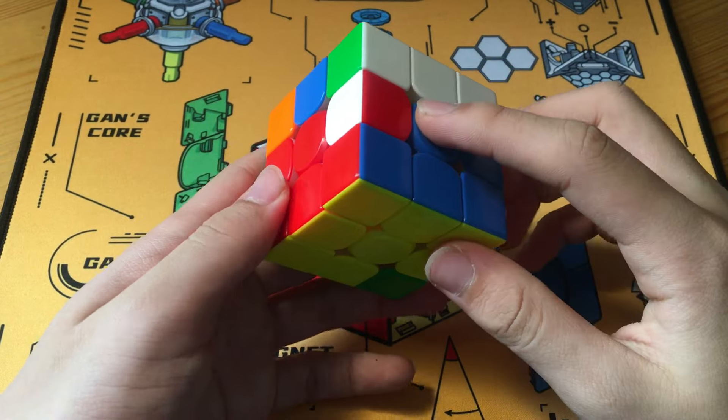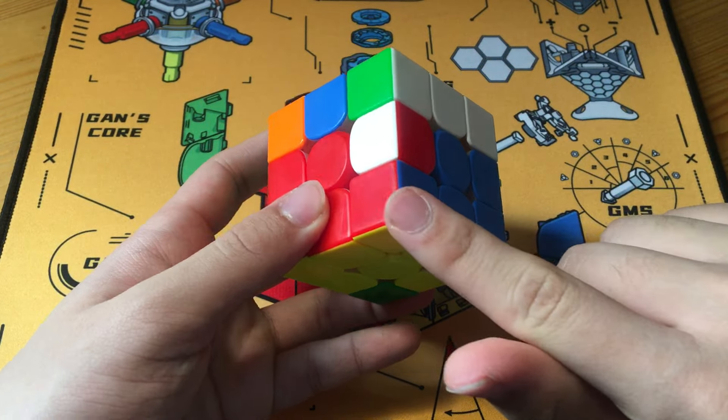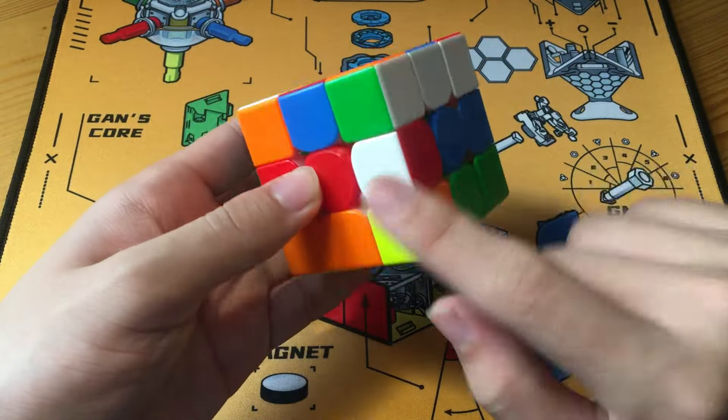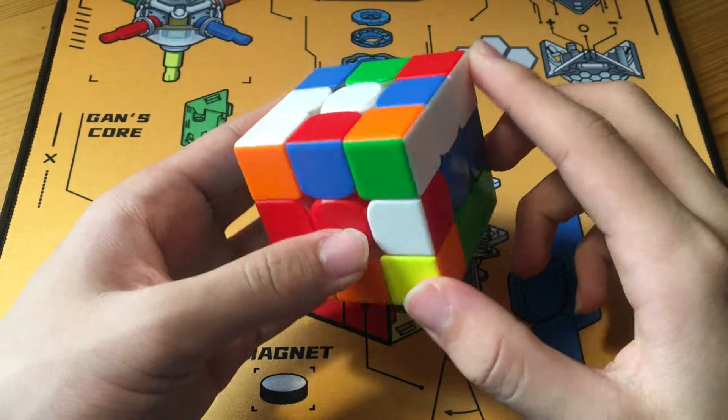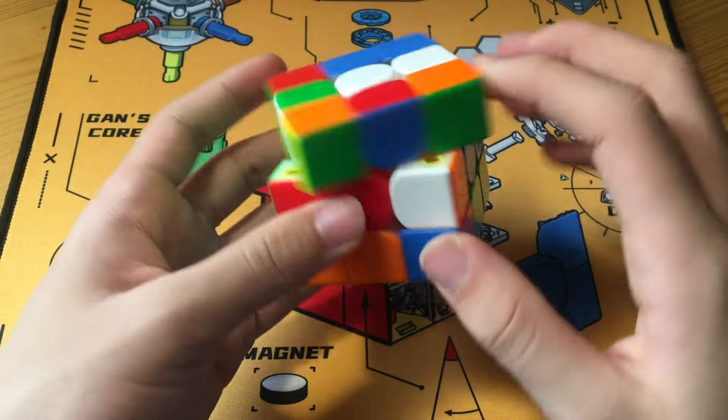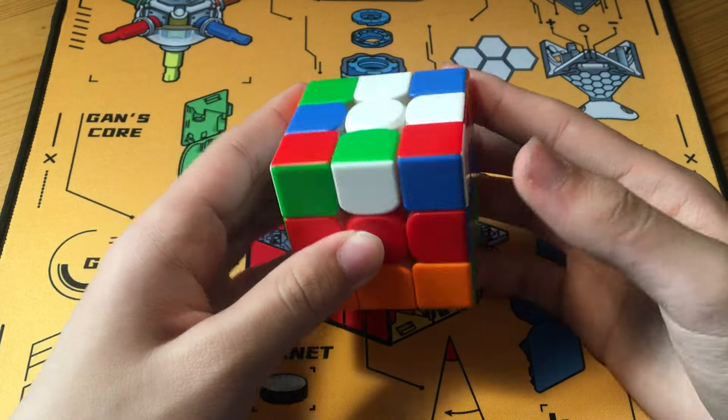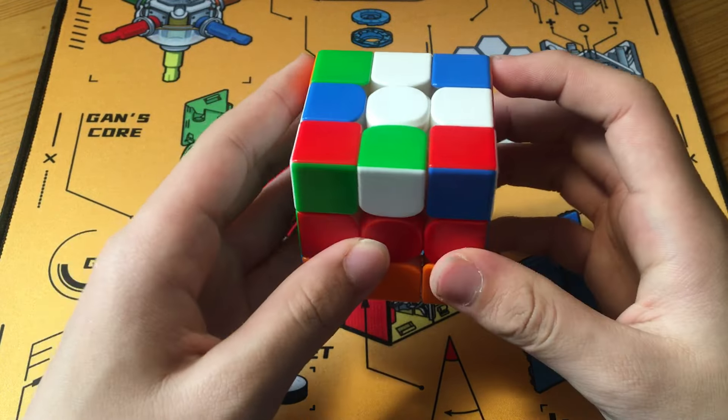And finally, we have a pseudo-slotting. So this corner and this edge are all solved. So all that's remaining is bringing over this empty slot. All that's remaining is this pseudo-pair, which he solves into the front. Very, very brilliantly efficient F2L, both the X cross and the final pseudo-slotting to finish.